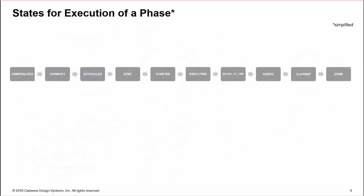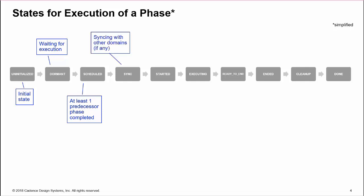Now, every phase passes through a series of states during a simulation. The initial state is uninitialized. When the simulation is started, the state changes to dormant. When the predecessor phase completes, the phase state changes to scheduled, then syncing to check for synchronization with other domains. When the phase becomes active, we first enter state started.